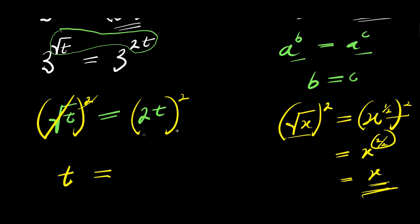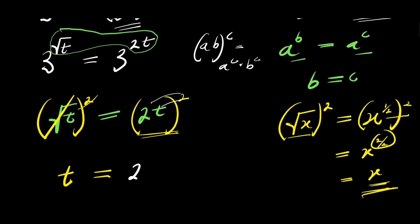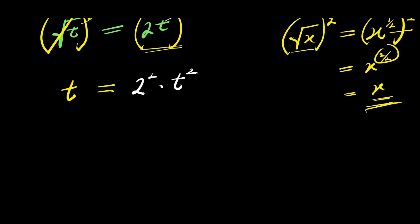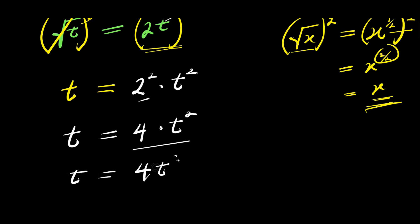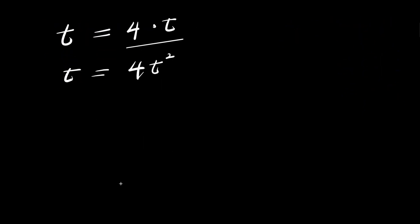We have t equals — for the right side, if you have a times b raised to the power of c, this equals a to the power of c times b to the power of c. So we distribute the power of 2: we have 2 to the power of 2 times t to the power of 2. That gives us t equals 4 times t squared.